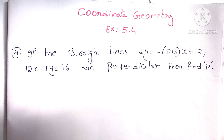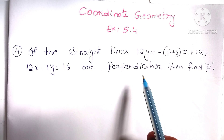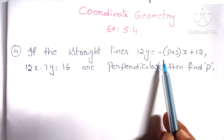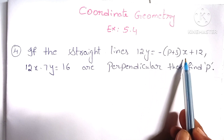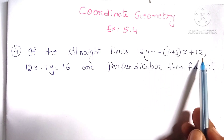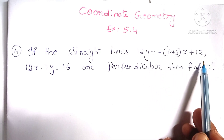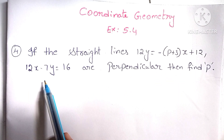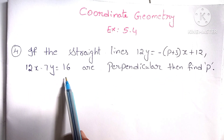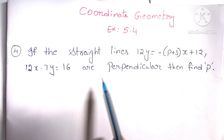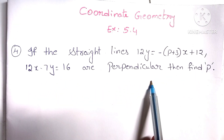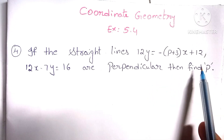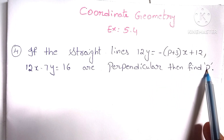If the straight lines 12y equal to minus of p plus 3 into x plus 12, and 12x minus 7y equal to 16 are perpendicular, then find the value of p.